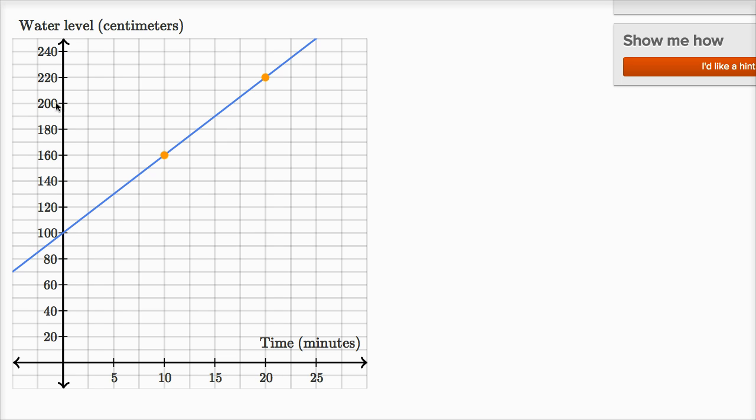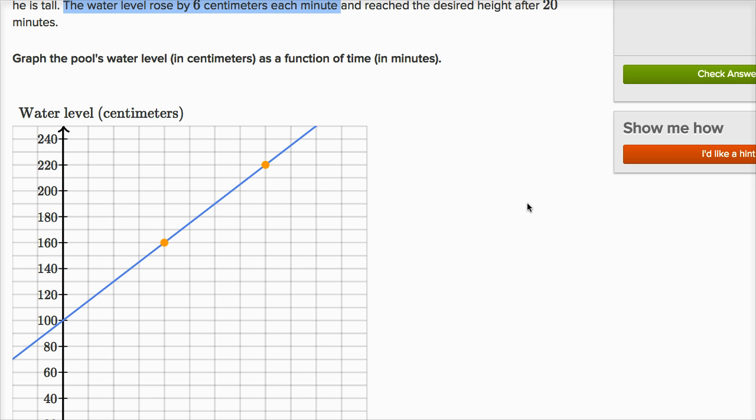To go from 100 to 220 is 120 more centimeters. So in 20 minutes, he got 120 centimeters. Well, 120 centimeters divided by 20 minutes is six centimeters per minute. So this is looking good. And we got it right.